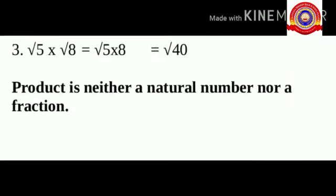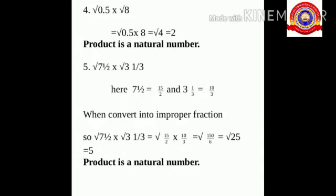Third question: root 5 into root 8 equals root 40. Simplifying, root 40 equals root 4 into root 10, and root 4 equals 2. So the product is a natural number.